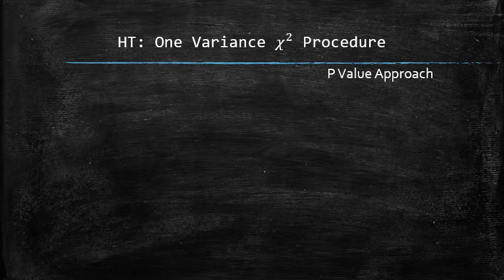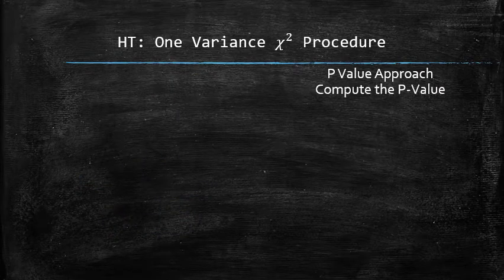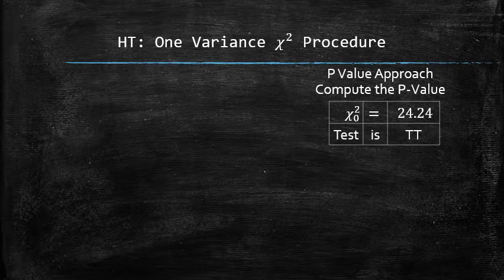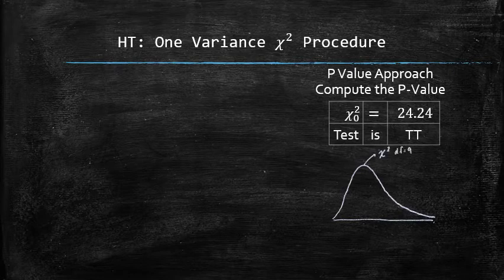In the p-value approach, we compute the p-value. In this approach, we need to know the test statistic and the type of the test. We find the p-value using the chi-square probability density curve with 9 degrees of freedom, according to the type of the test.